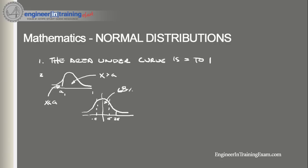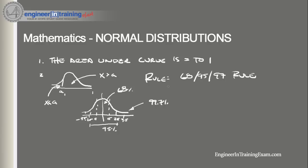For two standard deviations, 95% of the area falls within two standard deviations of the mean. And for three standard deviations, 99.7% of the total area under the curve falls within three standard deviations. You might have heard this as the 68-95-99.7 rule, meaning 68% of normally distributed data falls within one standard deviation, 95% within two, and 99.7% within three.